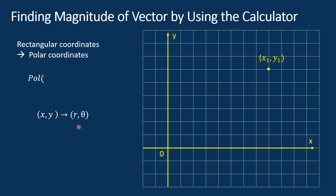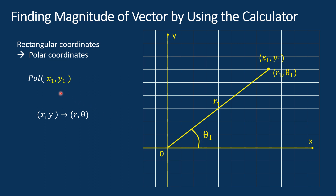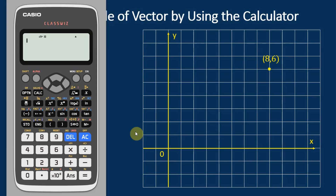The POL function allows you to convert rectangular coordinates (x, y) to polar coordinates (r, θ). Let's say we have a point with rectangular coordinate (x1, y1). In polar coordinates, that same point is represented as (r1, θ1). The r is the distance from the origin to the point, and θ is the angle between the positive x-axis and the line connecting the origin and the point. To perform the conversion, we input the rectangular coordinates into the bracket and press equal on the calculator.